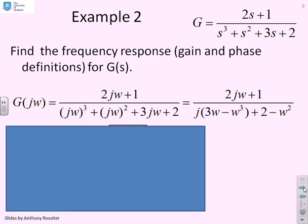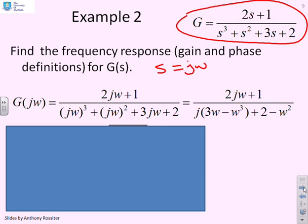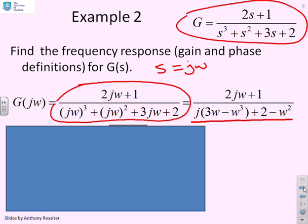Here's a second example. What if you had a transfer function G = (2s + 1)/(s³ + s² + 3s + 2)? To find the gain and phase, substitute s = jω directly: (2jω + 1)/((jω)³ + (jω)² + 3jω + 2). Combining real and imaginary parts, the imaginary bit in the denominator is 3ω - ω³ and the real bit is 2 - ω².